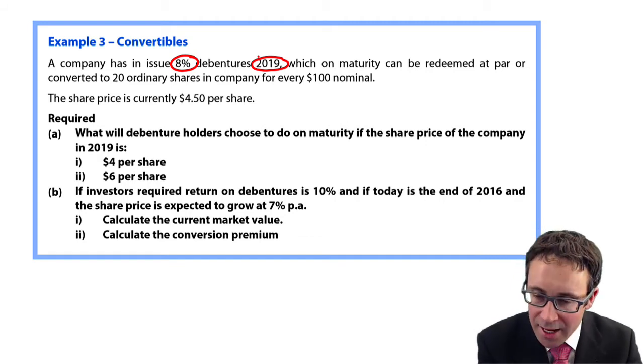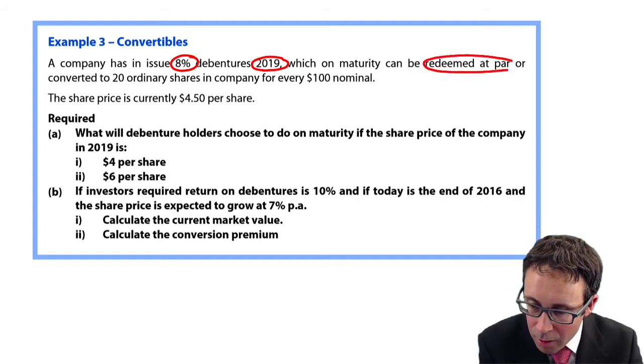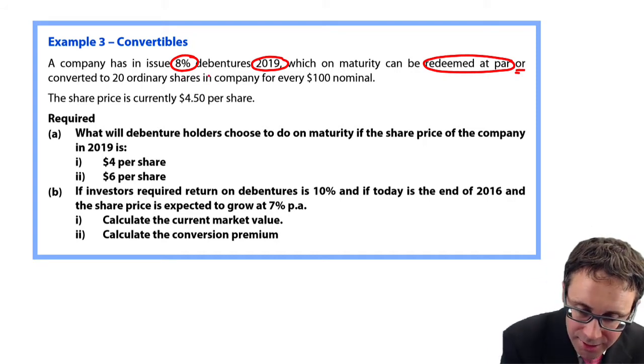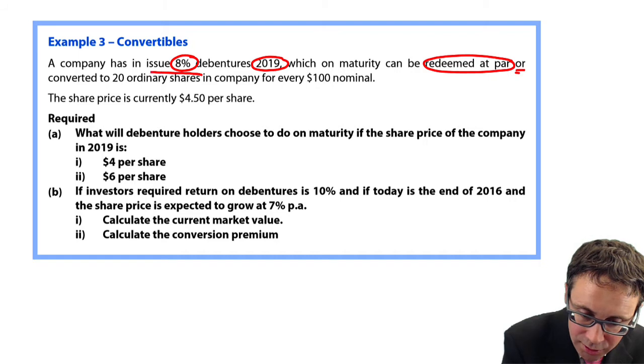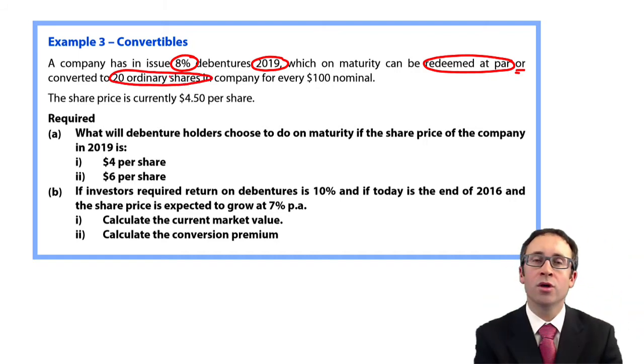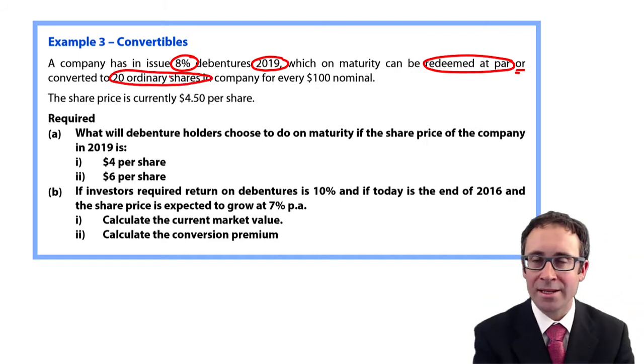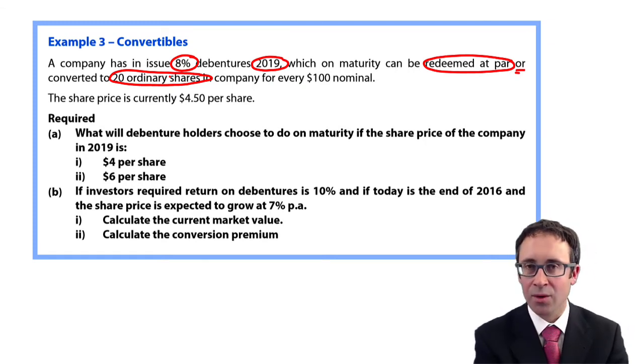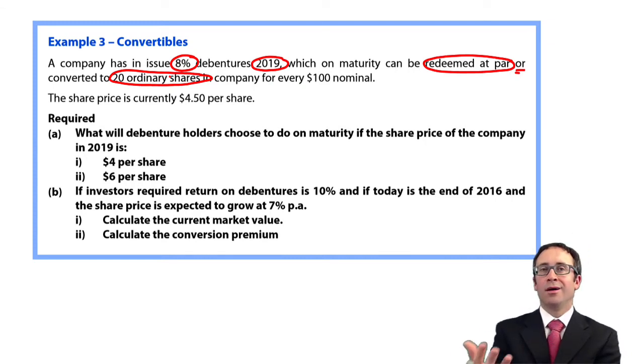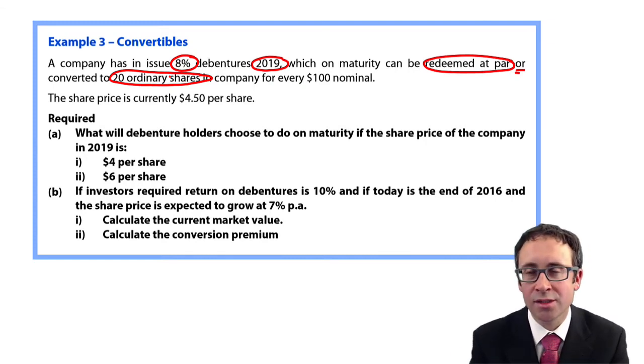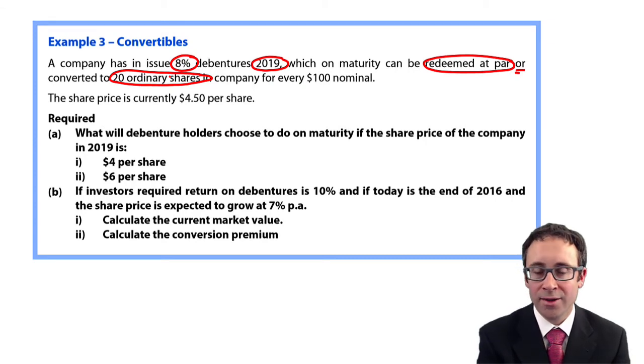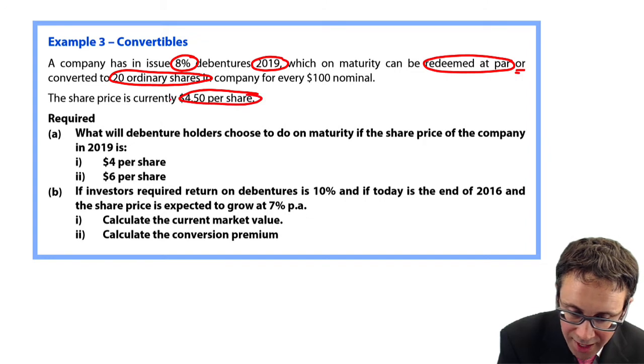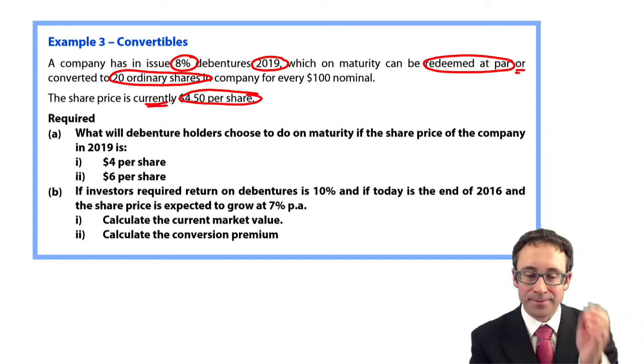However, they can be redeemed at par or converted into 20 ordinary shares in the company for every $100 of investment that you have made. So we have convertible debentures. You will either take $100 of cash or you will take 20 shares at whatever the market value is at that date. Share price is $4.50 per share currently. We don't know what it's going to be in the future.